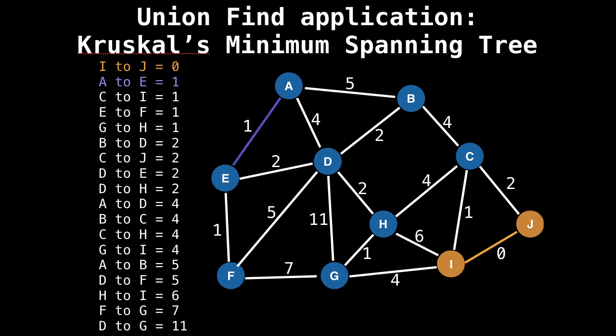Next is edge A to E. A to E don't belong to any group, so I'm going to unify them together into group purple. Next is C to I. I belongs to group orange, but C doesn't have a group yet, so C can go into group orange.